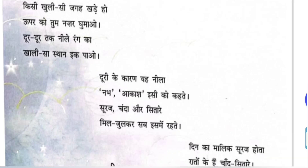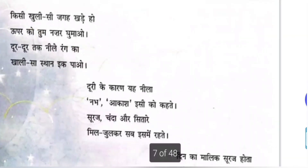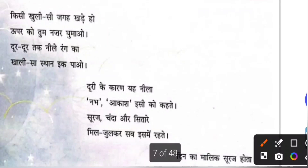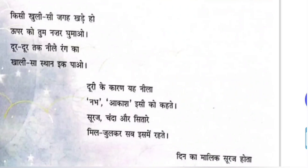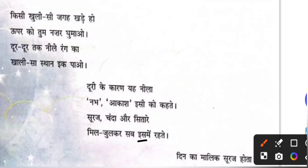The sun, the moon, and the stars are all living together in the sky — Mil julkar, sab ismed. 'Ismed' is the pronoun used for the sky (Nab/Akash). So Suresh (sun), Chanda (moon), and Sitare (stars) — where are you? Mil julkar. Through this stanza, the poet wants to convey the feeling of unity. So we also have to be united.